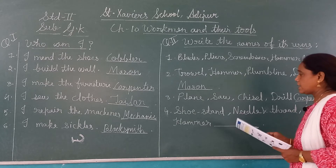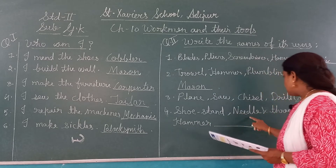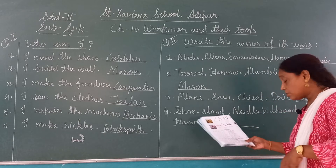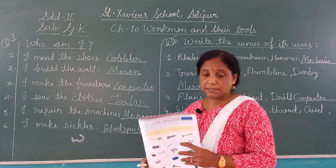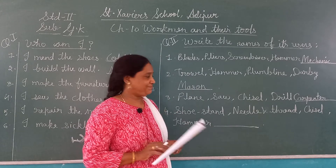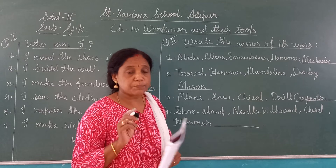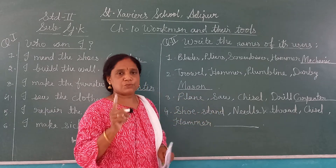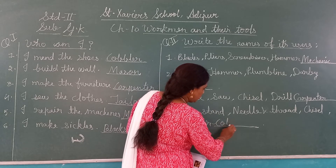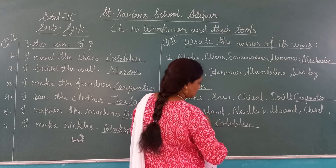Number four: shoe stand, needle and thread, chisel, hammer — who uses these? Shoe stand and needle and thread for stitching — now you know the answer, right? Cobbler — the one who stitches shoes and sandals — uses all these tools. So here we write C-O-B-B-L-E-R, cobbler.